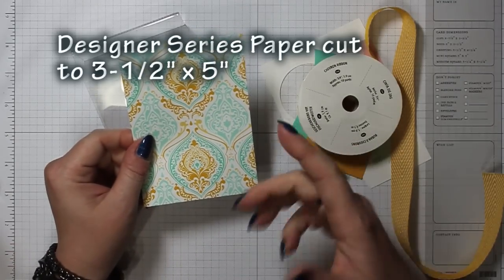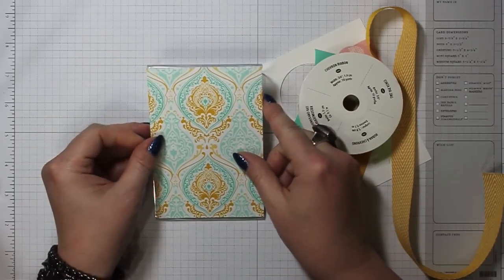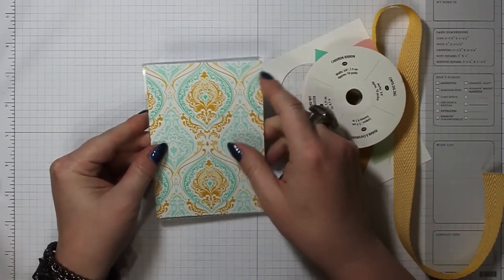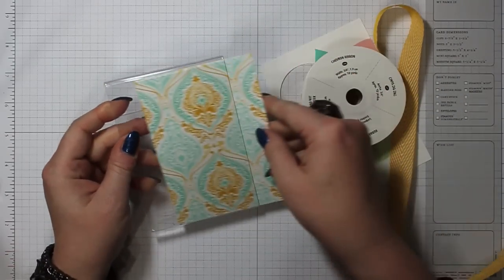You'll want to maybe measure yours or try it out. Sometimes I definitely don't cut any wider than three and a half, but sometimes I cut a hair longer than five, and then if it doesn't fit in there then I can trim it down. But you want it to fit in there really nicely and not have big gaps at the top and bottom.